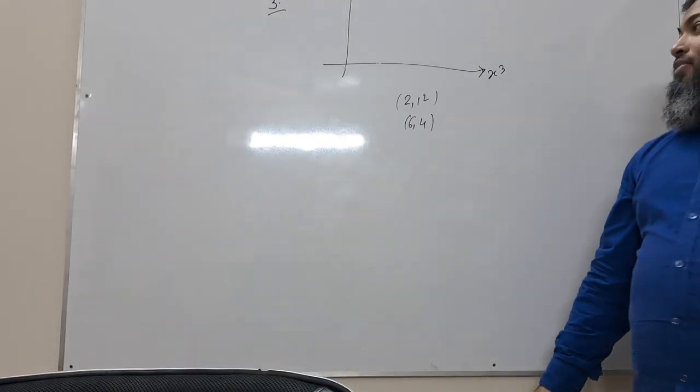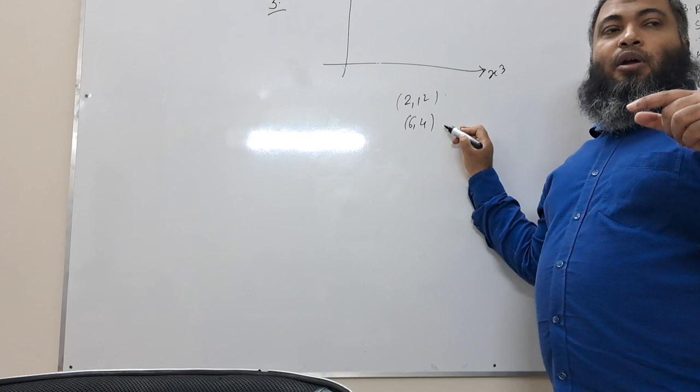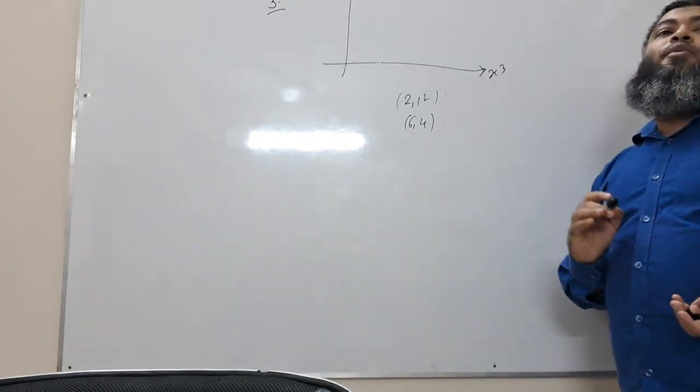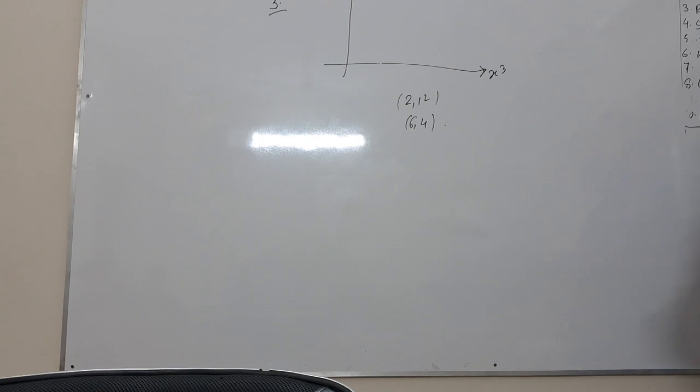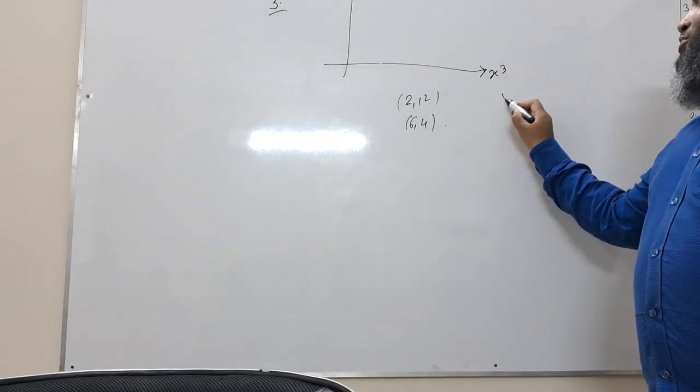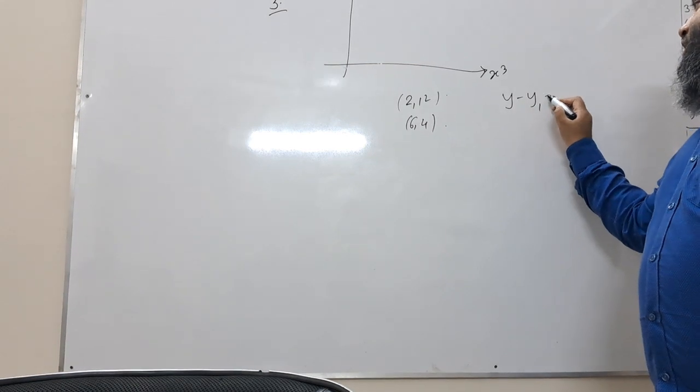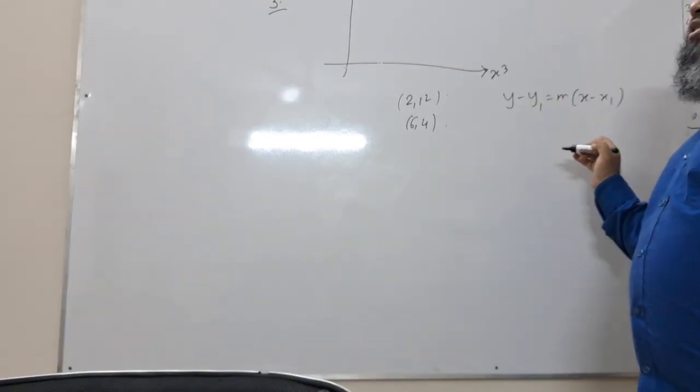What do you do? This is the line graph. Let me show you the question. What do you do? Y minus y1 over x minus x1. This is what we do.